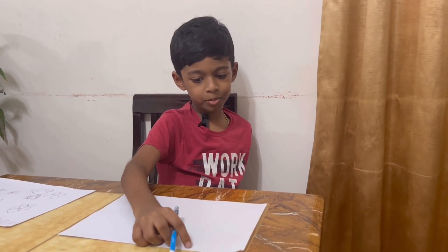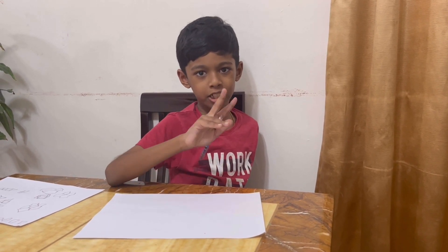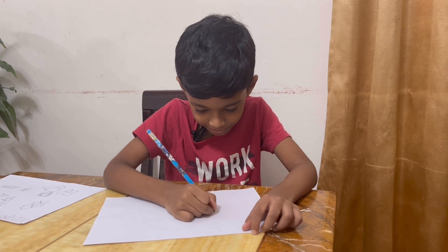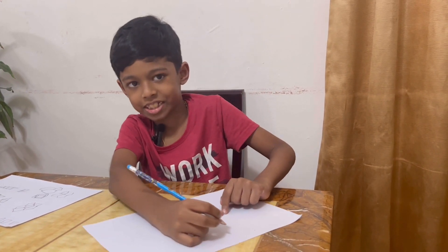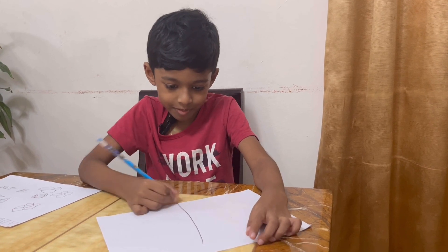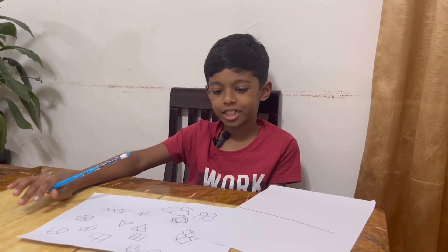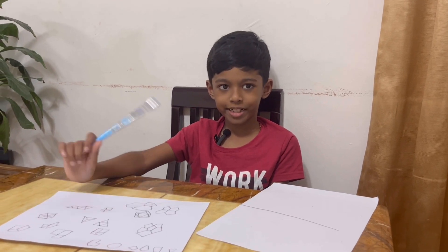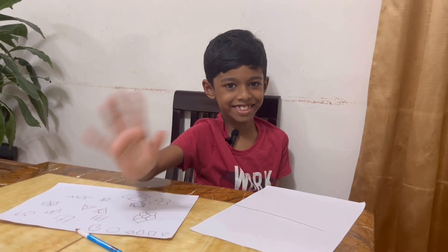In 0D you have a dot or a point, and in 1D you have lines — each dimension only has one shape. Comment if you have any questions, and I hope you learned something new!